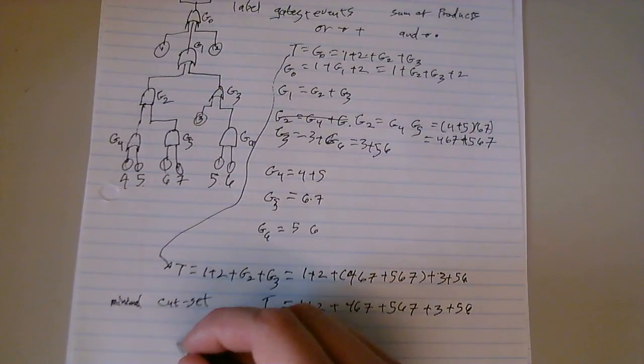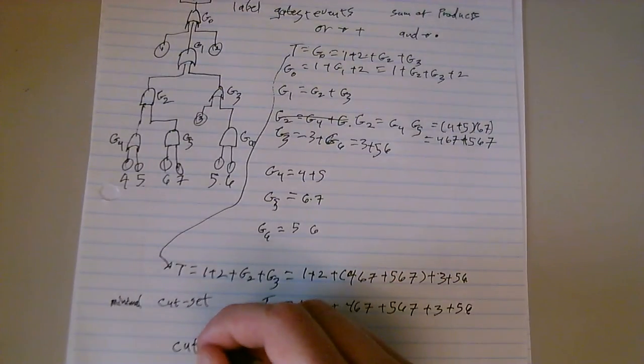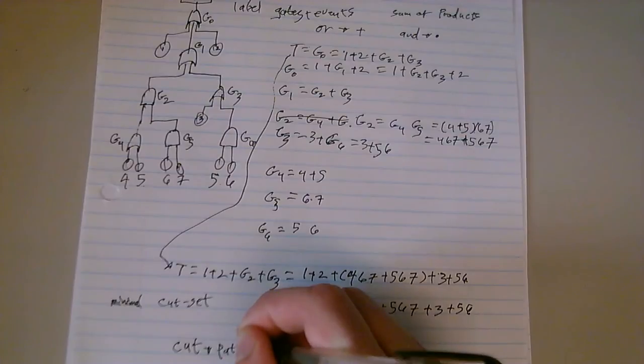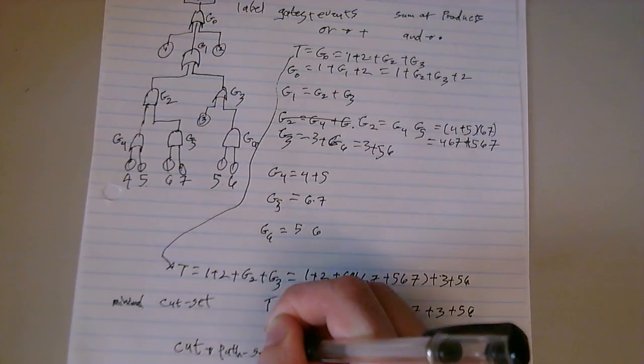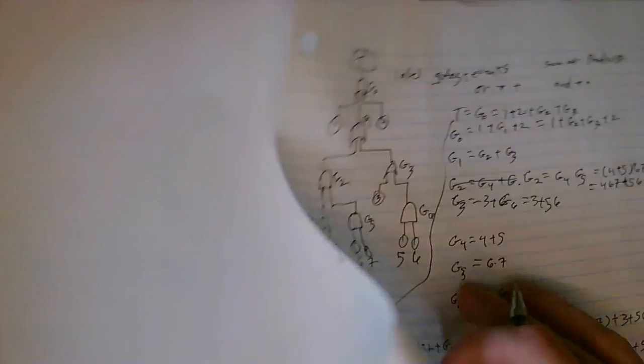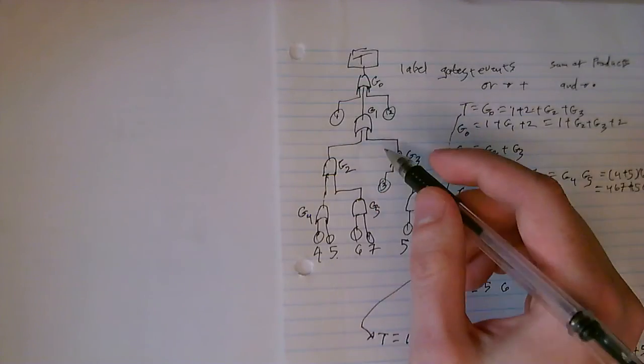Now, what if we want to go from cut set to path set? What you're going to do is you're going to take this diagram here, and all the OR gates go to AND gates, and all the AND gates go to OR gates.